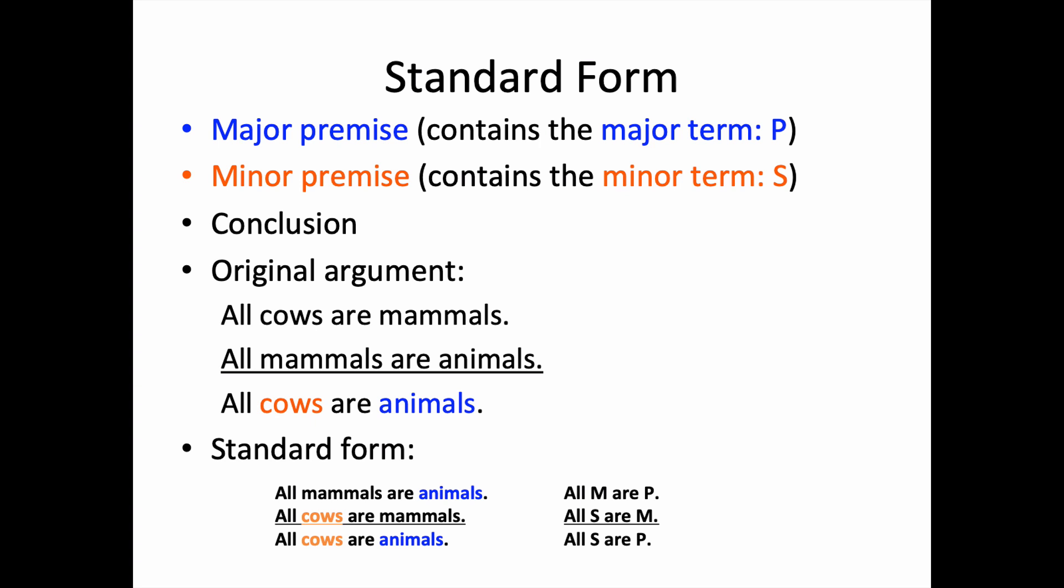One reminder and final note. The reminder is this: the major term and minor term are respectively represented by the capital letter P and S. The middle term is represented by the capital letter M. These are the standard symbols for, again respectively, the major, the minor, and the middle terms whenever you're dealing with a categorical syllogism.